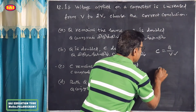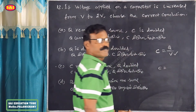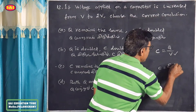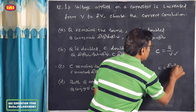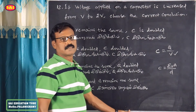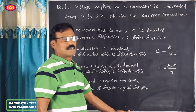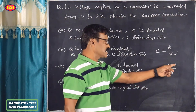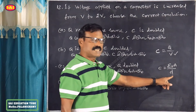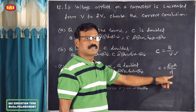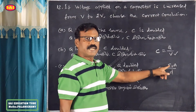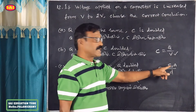C is equal to epsilon-naught times A divided by d — the equation for a capacitor — where A is the area of the plate and d is the distance between the plates.